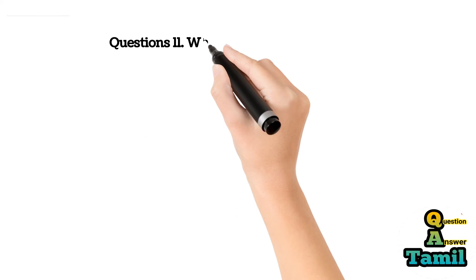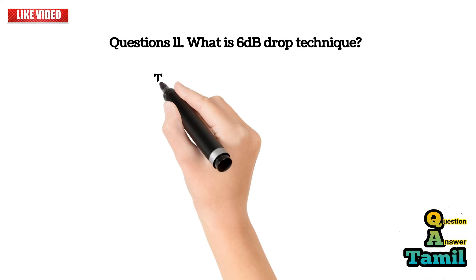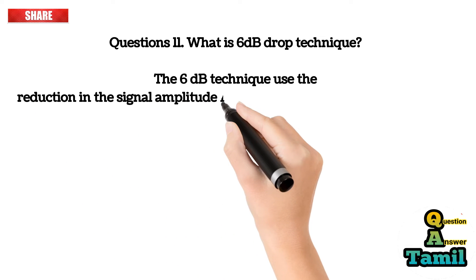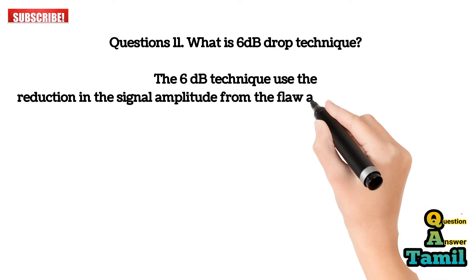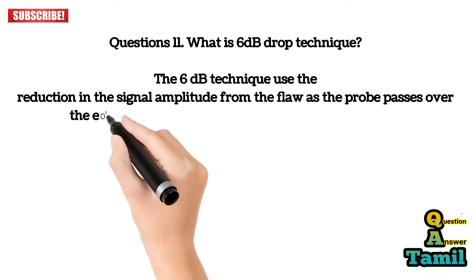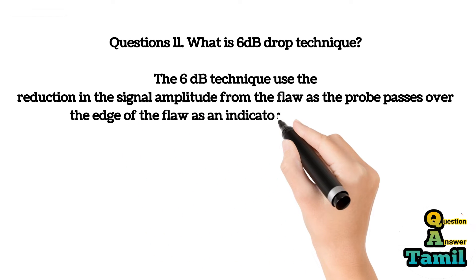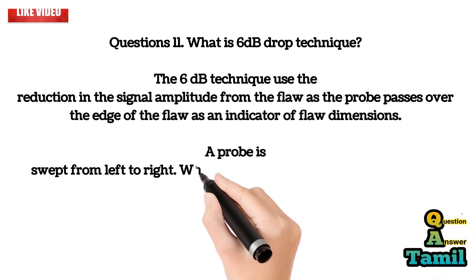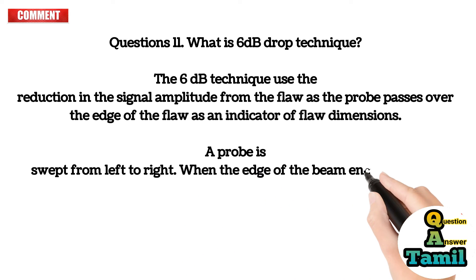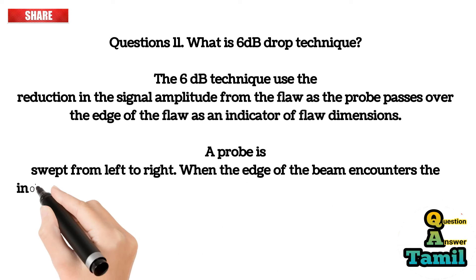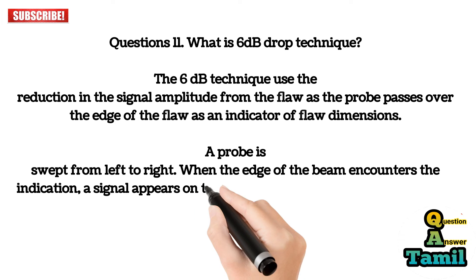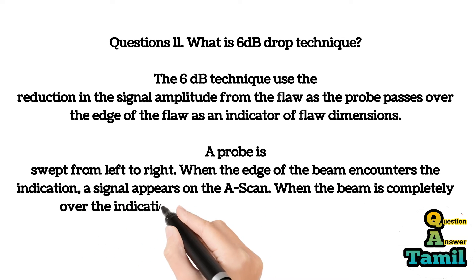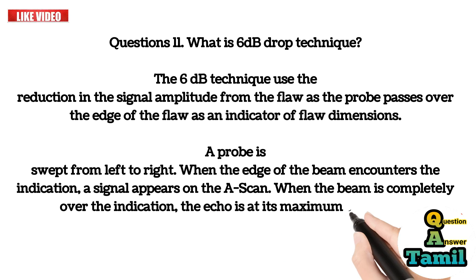Question 11: What is the 6 dB drop technique? The 6 dB technique uses the reduction in signal amplitude from the flaw as the probe passes over the edge of the flaw as an indicator of flaw dimensions. A probe is swept from left to right; when the edge of the beam encounters the indication, a signal appears on the A-scan. When the beam is completely over the indication, the echo is at its maximum amplitude.